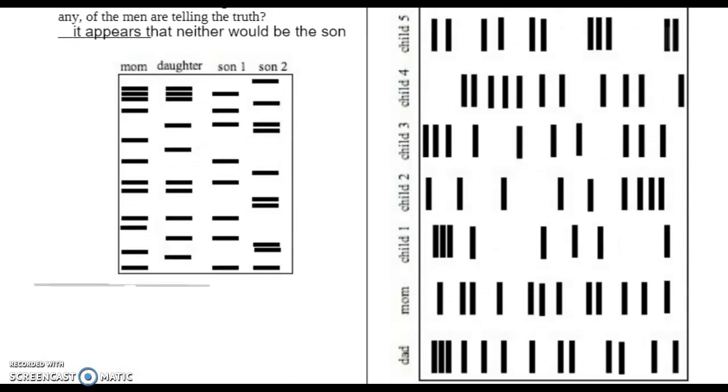Okay. Dad had this little triplet band here. So child 1 has that little triplet band. So that could have come, this could be the offspring. Child 1 has nothing that would not have come from either mom or dad. These three here came from dad. This one could have come from mom. This one could have come from mom. This one could have come from dad. This one could have come from mom. And this one could have come from mom. So child 1 is probably a child of Mr. and Mrs. Jones. Child 1.